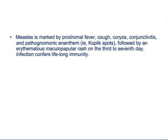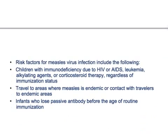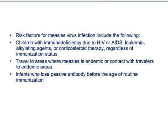When does the rash start and when do Koplik's spots appear — these are very important points. Risk factors for measles include children with immunodeficiency due to HIV, AIDS, leukemia, alkylating agents, or corticosteroid therapy, regardless of immunization status. Importantly, immunocompromised patients often do not develop the rash. Travel to endemic areas or contact with travelers from endemic areas, and infants who lose passive antibody before routine immunization, are also risk factors.